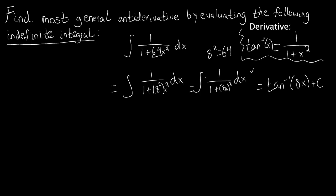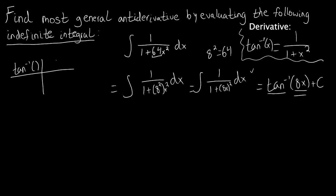The reason we can't just accept that antiderivative as stated is because if we have 1 over 1 plus something squared, the antiderivative should look like tangent inverse of that something, plus an arbitrary constant C for the constant of integration. So what we're going to do now is check: does this function, when differentiated, give us our original integrand? Taking the derivative of tangent inverse of 8x requires the chain rule. The outermost function is tangent inverse, and the innermost function is 8x.